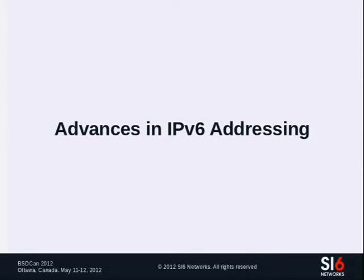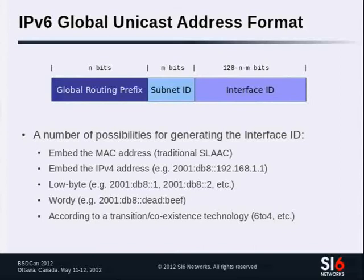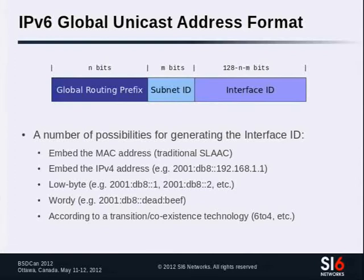First, advances in IPv6 addressing. This is the syntax of global IPv6 addresses. Essentially they are the same as IPv4 addresses: you have a global routing prefix assigned by your upstream provider, then a few bits for the subnet ID, the same as IPv4. The only difference is that in IPv6 you have an interface ID, analogous to the host ID in IPv4 addresses, but much larger — 64 bits — with several options for selecting that value.